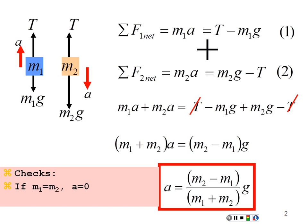Here's a check. If mass 1 were equal to mass 2, there would be no impetus to move one way or the other and it would be stationary — the numerator would be zero and acceleration would be zero, which makes sense. If mass 2 were a lot bigger than mass 1, the system would basically fall according to gravity. In the limit, M2 over M2 equals 1, giving acceleration equal to G. It's always good to check with extreme conditions to see if results make sense.